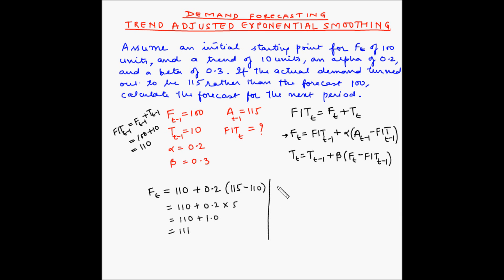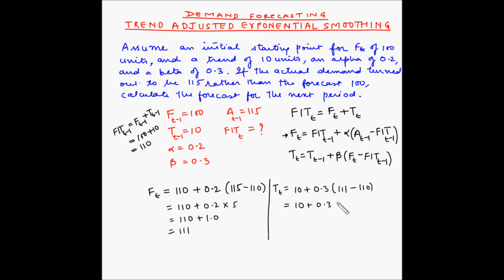Now let us find the trend for period t. Trend for t equals trend for t minus 1 plus beta multiplied by forecast for period t minus forecast including trend for t minus 1. That is 10 plus 0.3 multiplied by 111 minus 110 = 10 plus 0.3 times 1 = 10.3.